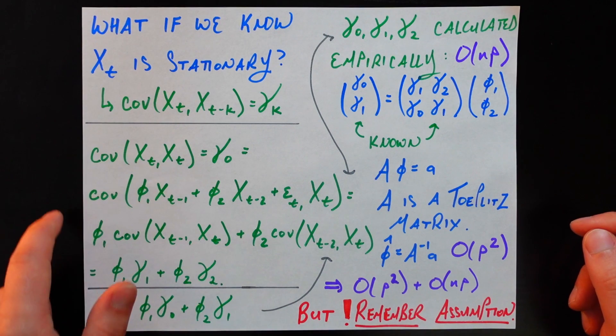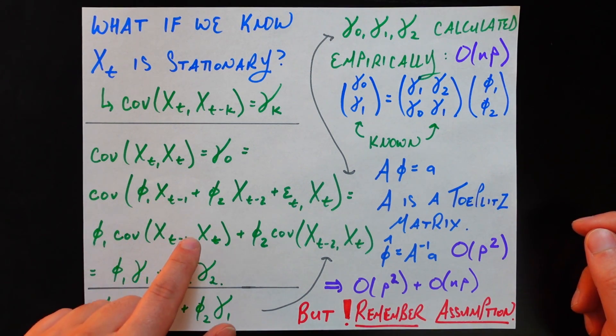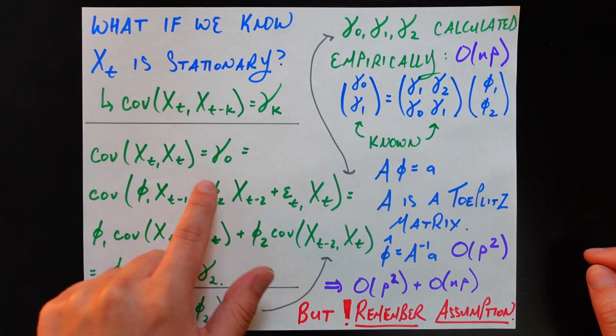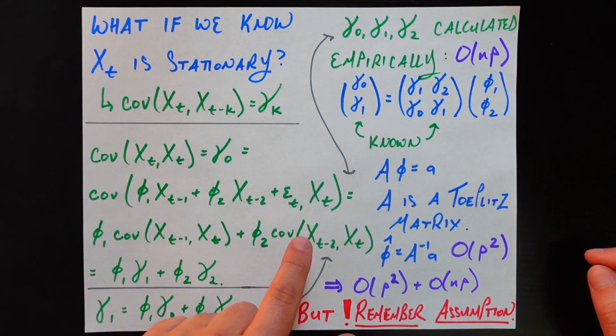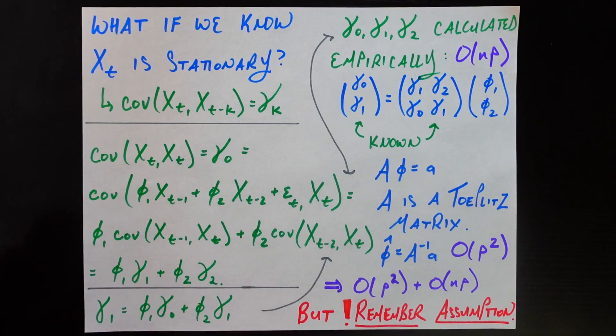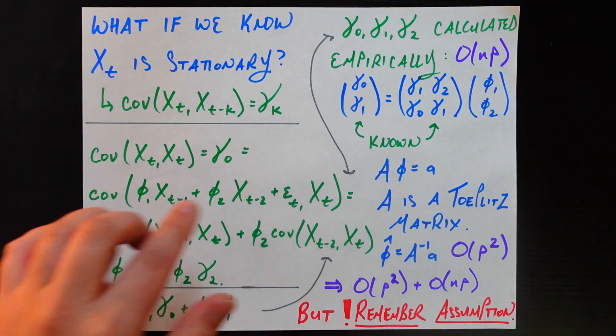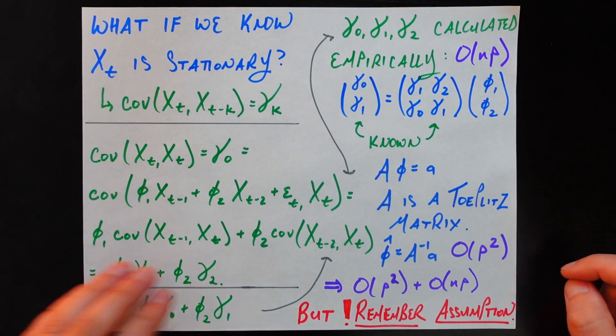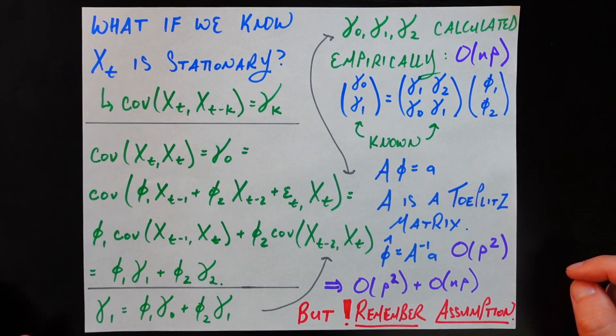So you can re-familiarize yourself with those rules, or just take it as given that those are true for covariances. And so doing that, we get phi1, which gets pulled out, covariance of X_{t-1} X_t plus, so this plus is now outside the covariances, phi2, which is also constant, so it got pulled out, covariance of X_{t-2} X_t. And hey, what happened to this epsilon_t? Well, that epsilon_t, under the assumption of the model, it's considered just to be white noise. And so when you think about the covariance of white noise and something else, that's just going to be 0, because there's no relationship under the assumption of this model between the white noise and the time series we care about. So that just goes away, which is why you don't see it on this line.